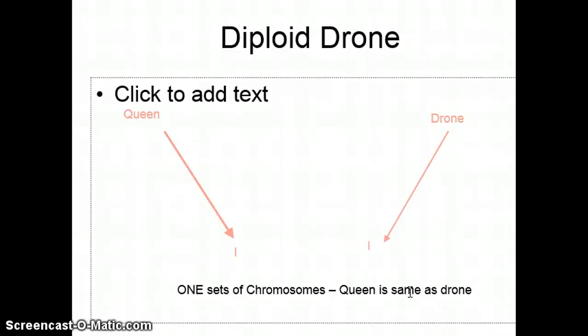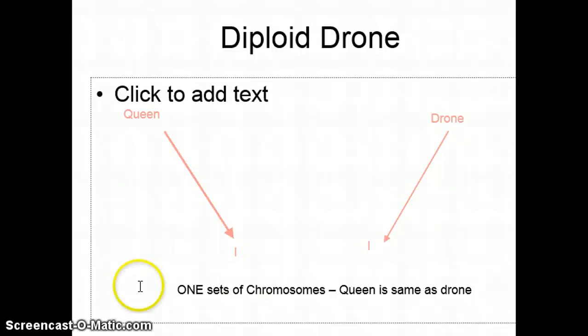She would essentially mate with her brother — it's icky, I know. She would be letting sperm down thinking she was going to lay a worker, but in fact when she lets that sperm down it's really her own genetic self. So you would get a diploid drone — one set and one set — same genetics. This is the best way to explain diploid versus haploid.